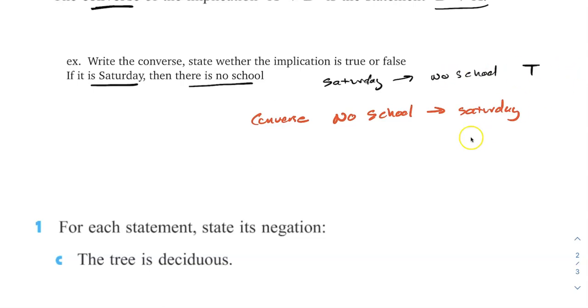So we're just going to switch these two things. No school implies Saturday. Then we want to know if that's true or false. Now this is actually false because you have no school does not mean it has to be Saturday. It could be Sunday, it could be holiday. So false. That's why the converse is not always true. Sometimes it is. And then when it is, we have to say it if and only if. But that's why it's always good to check.